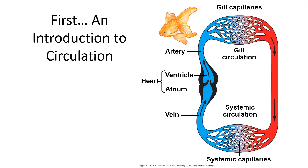Let's start with a brief introduction to the circulatory system. And instead of jumping right into the human system, let's start with the fish. Why fish? Well it's quite fascinating, and also fish are a bit simpler. They have a circulatory system that has to do everything our circulation needs to do, but they have a lower metabolic rate and the demands of the tissues are not as great as we see in a mammal like ourselves.